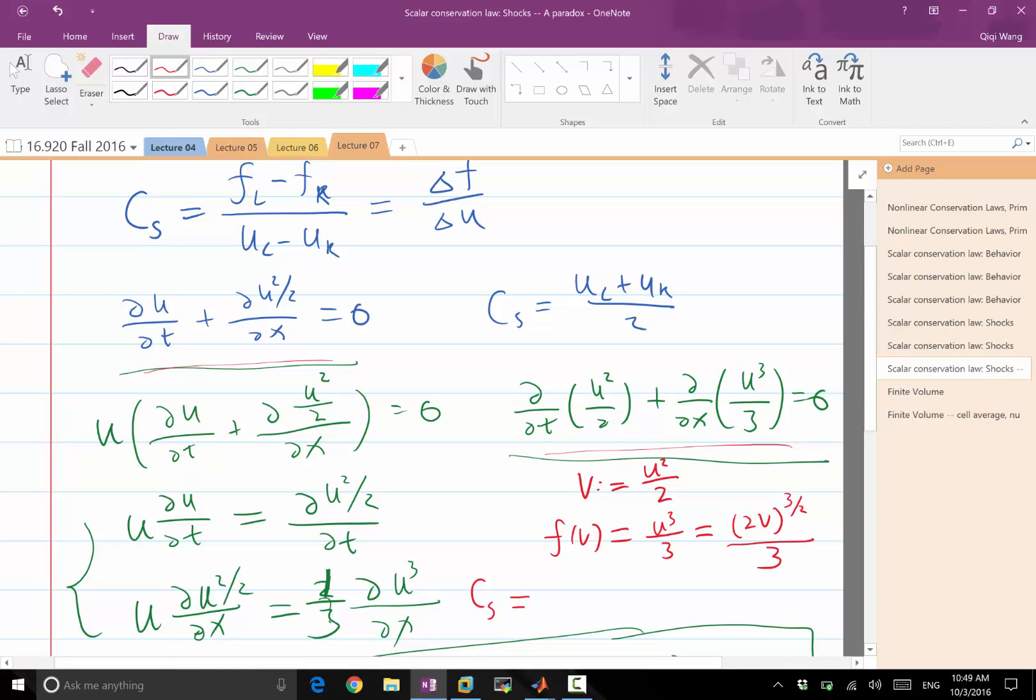The shock speed in this case equals delta f(V) over delta V, which equals delta of 2V^(3/2) over 3 divided by delta V. This is different from half of UL plus UR. These two only agree when UL and UR are infinitesimally close to each other.